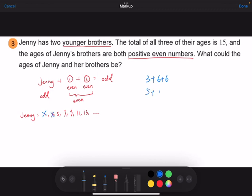How about five? Five plus five plus five is 15. Then all three of them will be of the same age. So no, it doesn't work.